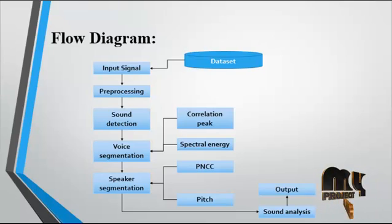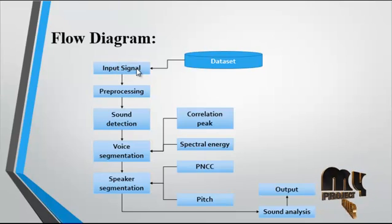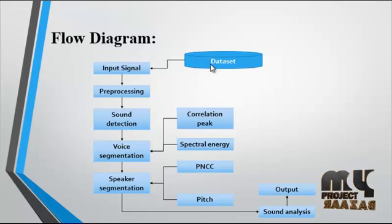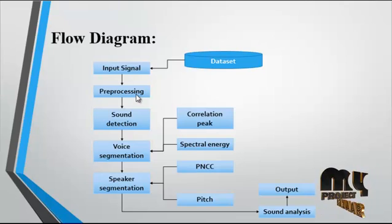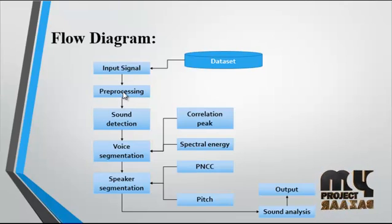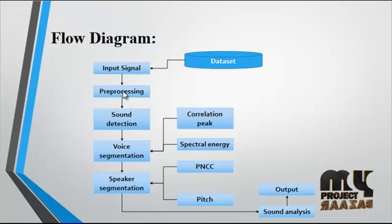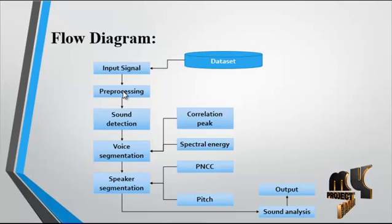Now we discuss the flow diagram for the process. First, the input signal is taken from the dataset. The dataset consists of a number of signals present in a single folder. After getting the input signal, pre-processing is undertaken. Pre-processing involves filtering the input signal to remove unwanted noise from the signal.